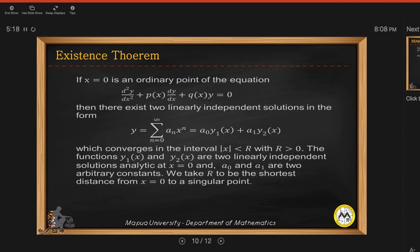So this will converge in the interval, the absolute value of x less than r, with r is greater than 0. So for simplicity, we always use x equals 0 as your ordinary point. So the interval of convergence will just be from negative r to positive r. Your x will be from negative r to positive r.